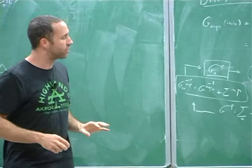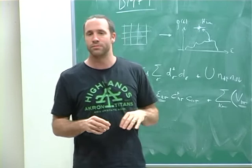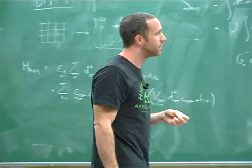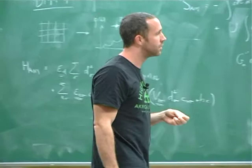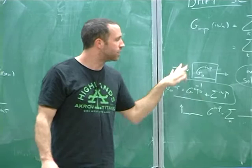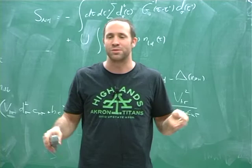Until here, are there any questions? This is pretty much setting the stage. In practice, it turns out you can essentially start with any G0 and plug it into the impurity solver, and this converges. Of course, if you have a smarter guess, the thing will converge faster, but you don't need a very good guess at the beginning.